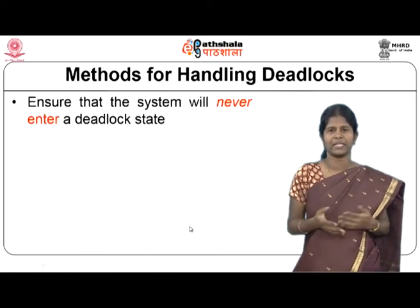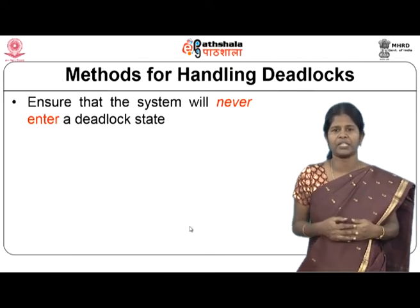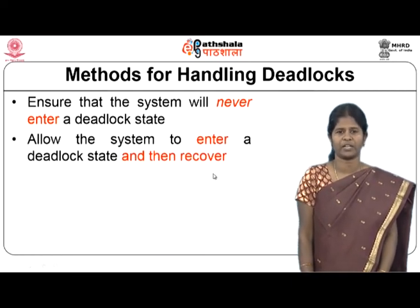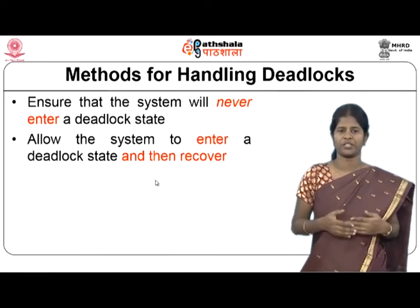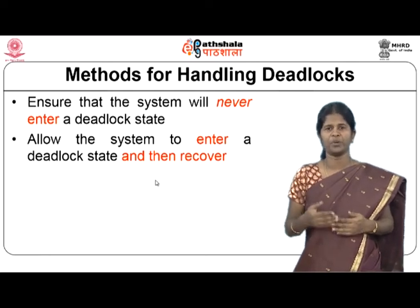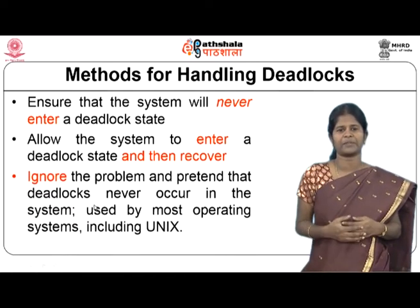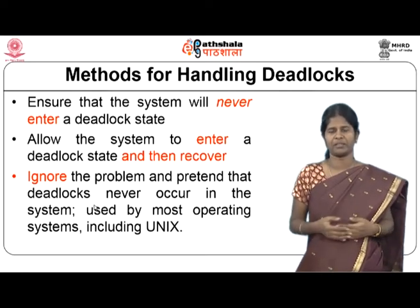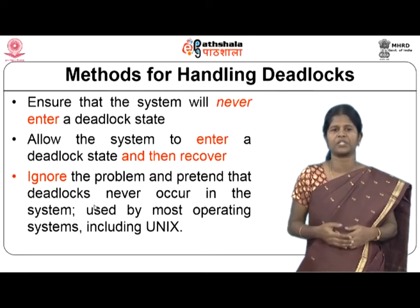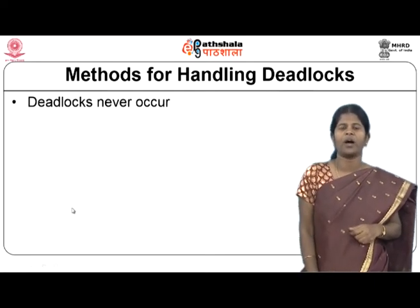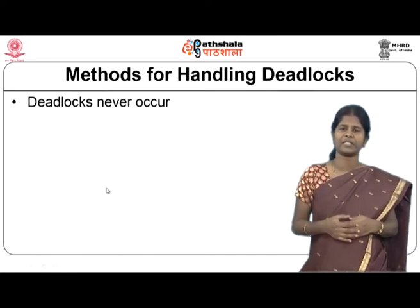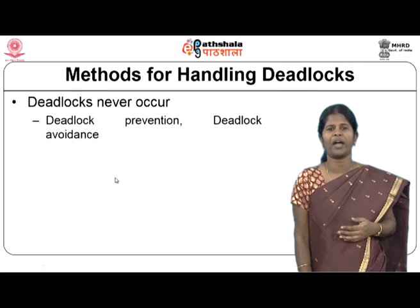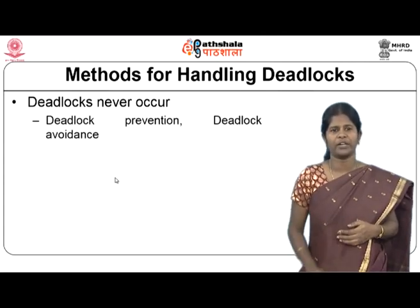How do we handle deadlocks? One approach is to ensure the system never enters a deadlock state, using methods for deadlock prevention and deadlock avoidance. Deadlock prevention ensures that at least one of the four necessary conditions — mutual exclusion, hold and wait, no preemption, circular wait — does not hold, thereby preventing deadlocks from occurring.